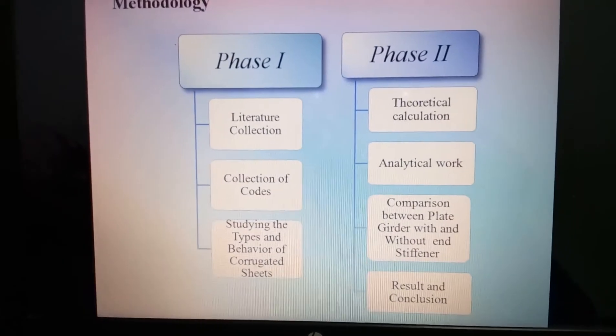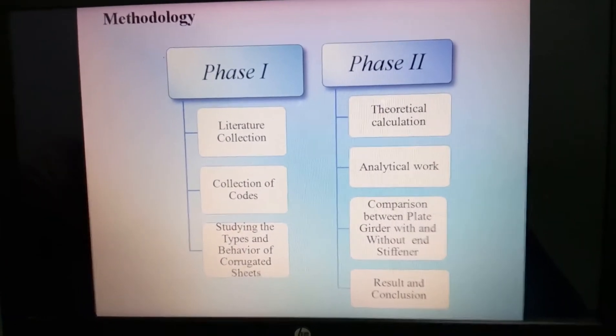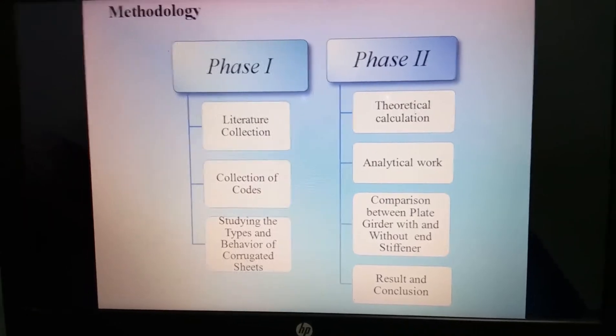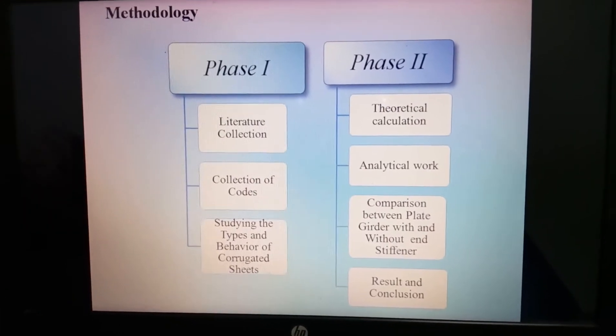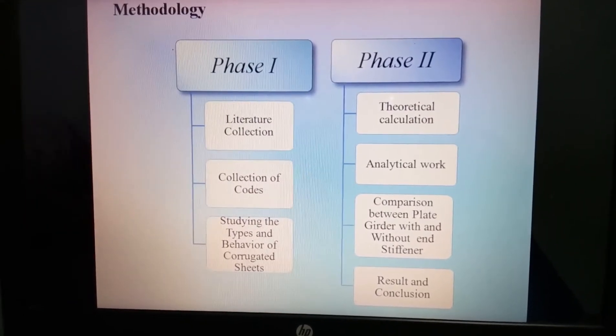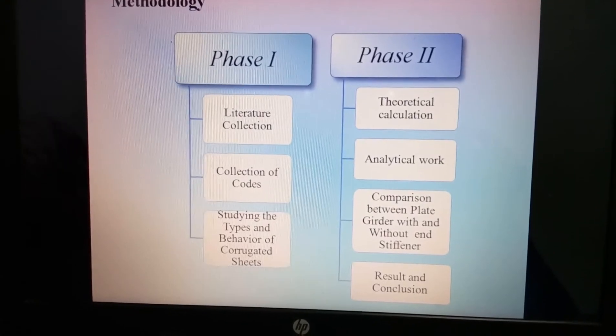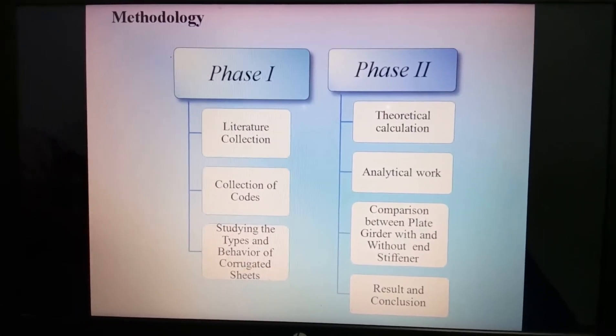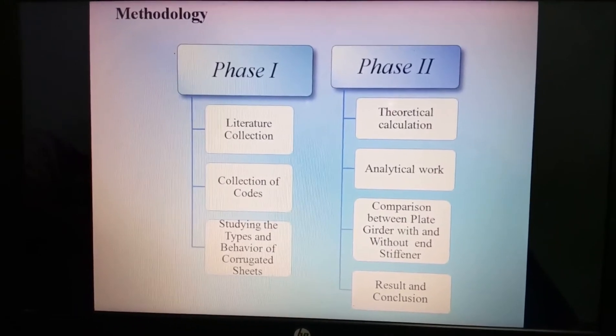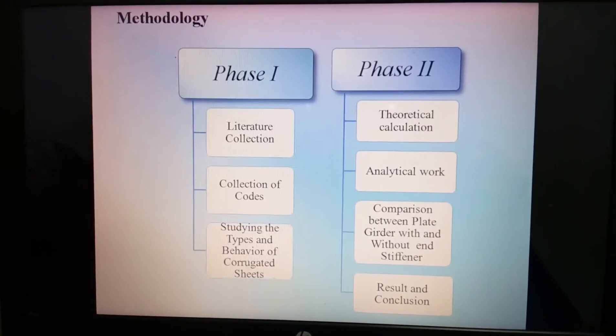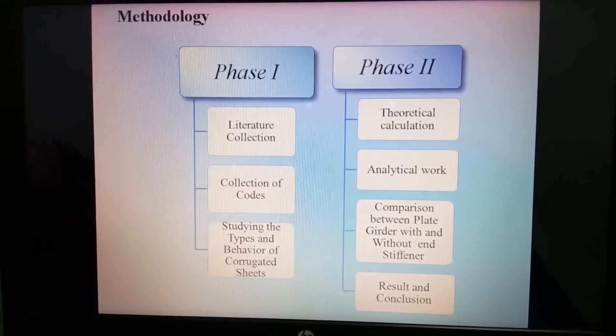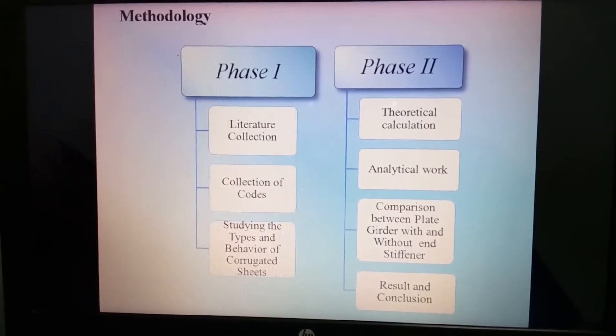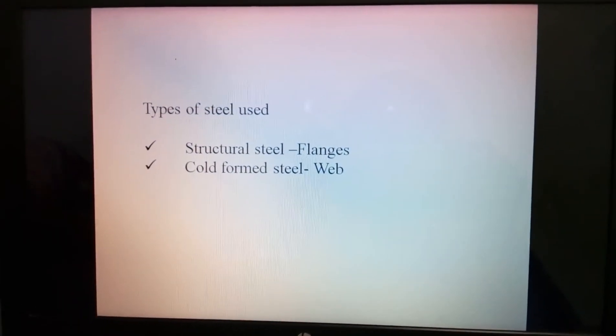This is my methodology. In phase one I did literature collection, collection of codes and studying the types and behavior of corrugated sheets. In phase two I did theoretical calculation, analytical work, comparison between plate girders with and without end stiffener. Finally we concluded with result and conclusion.